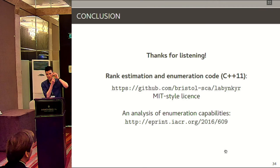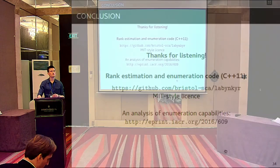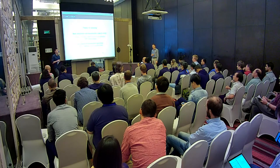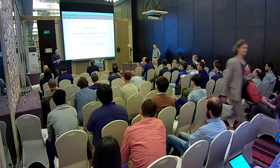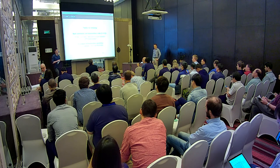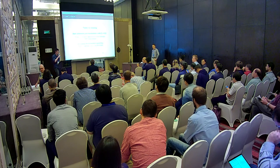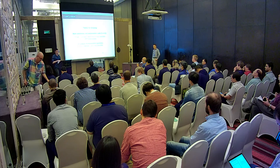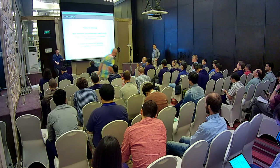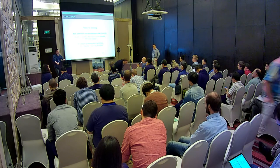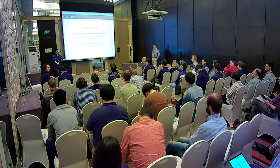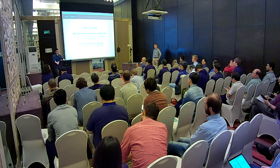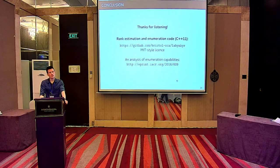Question from the audience: In many cases you can attack both the first and last subkey by doing encryptions and decryptions in side-channel attacks, getting two different rankings. Assuming the first and last keys are related — for example in DES, they are just permutations of each other — could you devise a better ranking algorithm exploiting that structure? Response: That would be interesting — have a try.